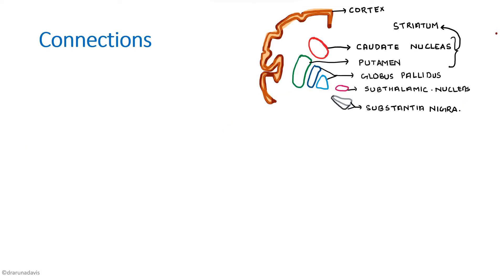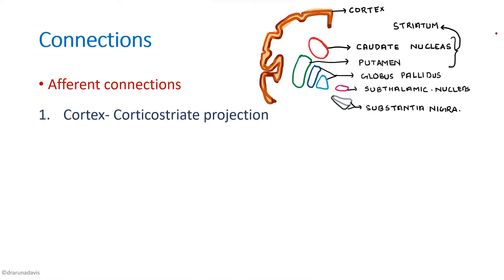Next, we can write about the connections. First, we have to write about the afferent connections to the basal ganglia — afferent means the connections that are coming to the basal ganglia. So basically, from the cortex, we have got the corticostriate projection. The caudate nucleus and putamen are together called striatum, so the afferent connections from the cortex to the striatum is called the corticostriate projection.